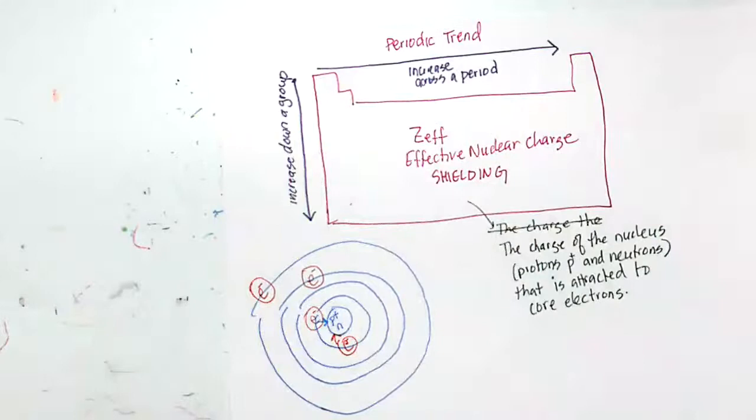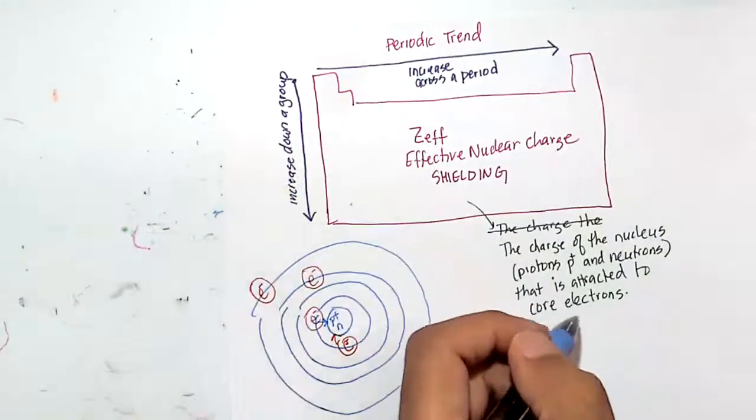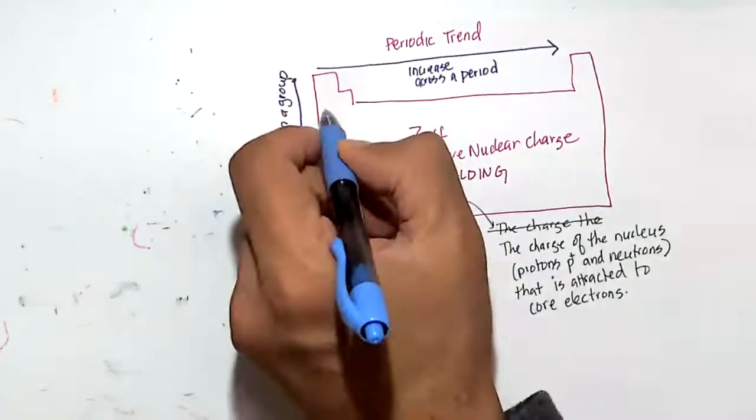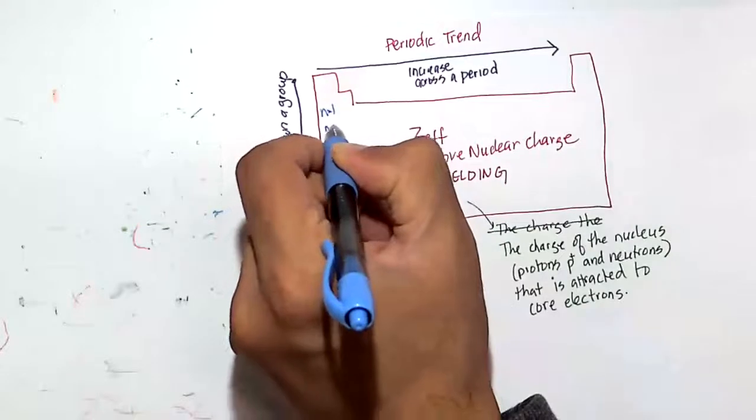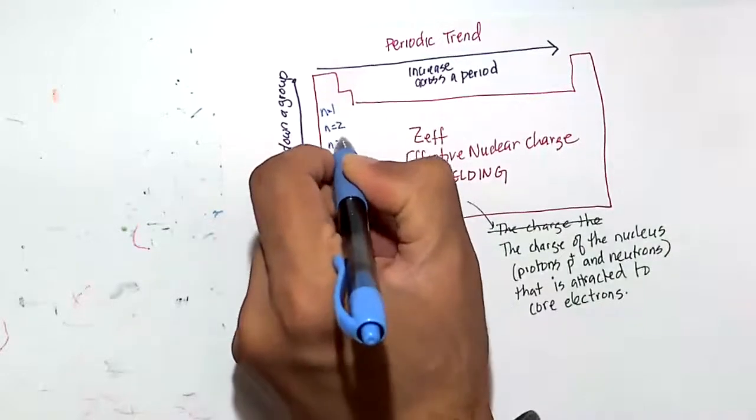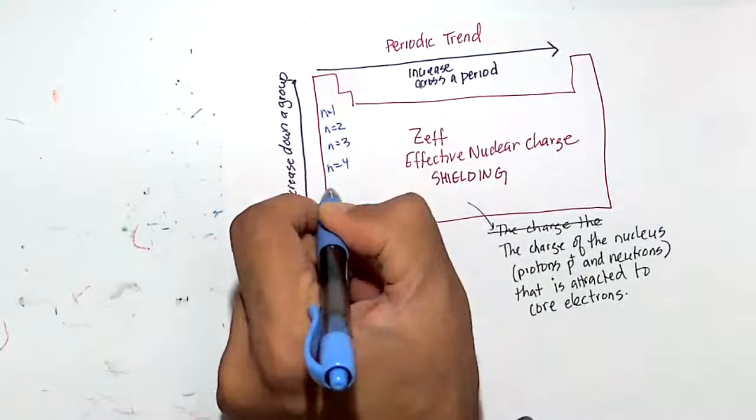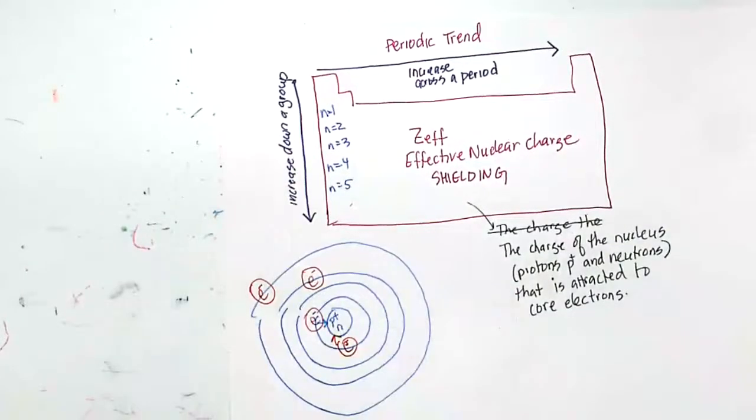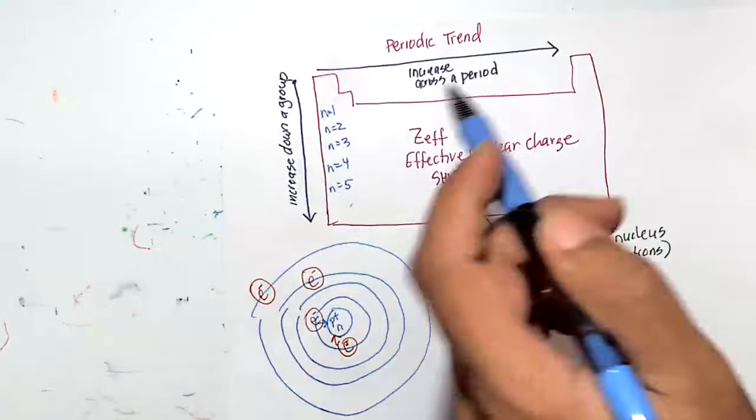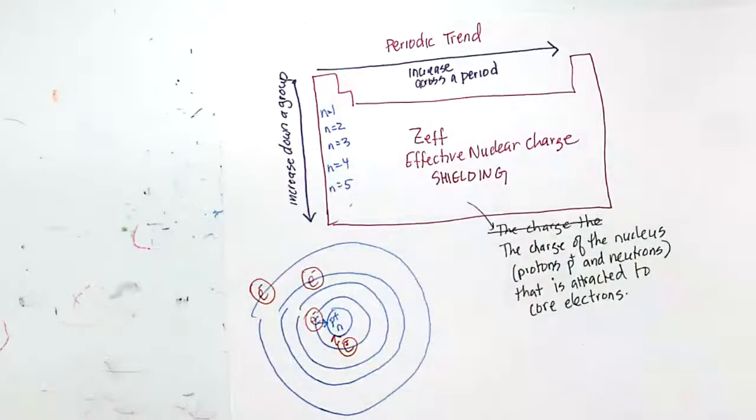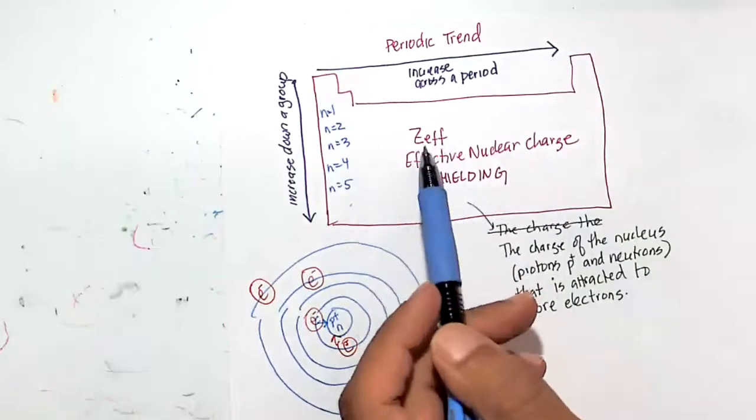So this is the trend of shielding. If you increase across a period, there's more electrons, so obviously more shielding by the core. If you go down a group, remember we're going to higher and higher energy levels: n equals one, n equals two, n equals three. Higher and higher principal quantum numbers, more and more outer electrons, so obviously there'll be more and more shielding.